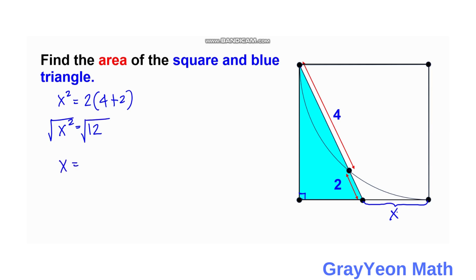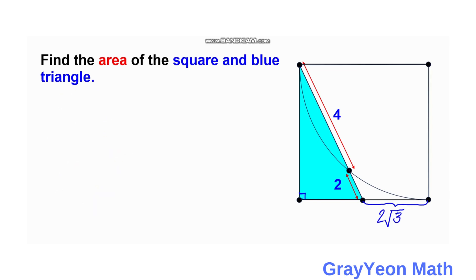x = √(4×3), and since four is a perfect square we can take its square root outside the radical, giving x = 2√3. Now, labeling the side of the square as a, we already know the tangent length is 2√3, so we just need to subtract that to get the remaining portion of the side, which is a minus 2√3.